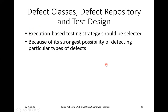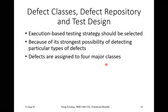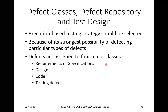The execution-based strategy is recommended because of its strongest possibility of detecting particular types of defects during execution. In execution-based testing strategy, defects are assigned to four major classes: requirement or specification defects, design defects, code defects, and testing defects. These are the defects that occur during requirement gathering, the design process, the coding/development part, and the testing process respectively.